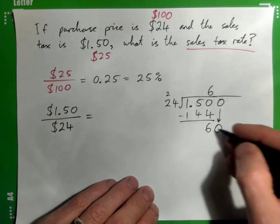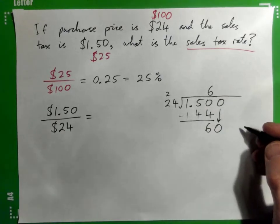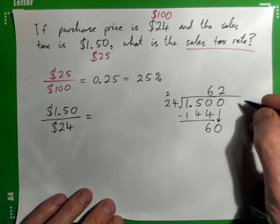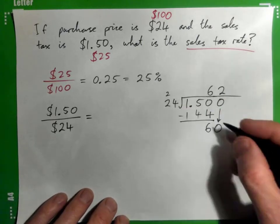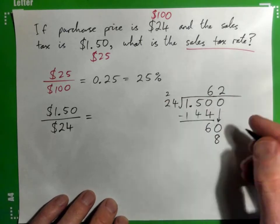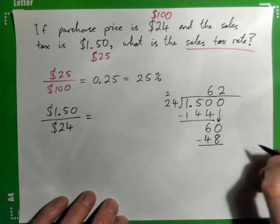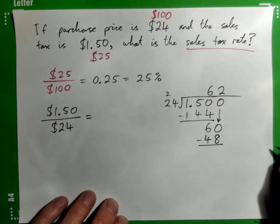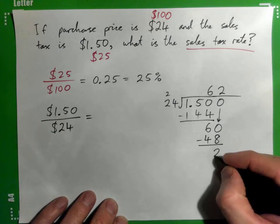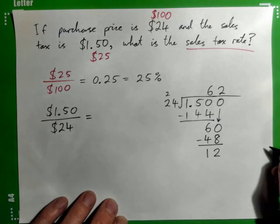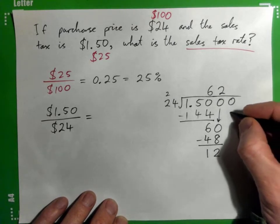24 into 60. Good, twice, yep. 2 times 4, 8. 2 times 2, 4. And subtract. 2, 12, right? And bring down another 0.